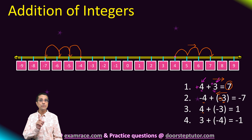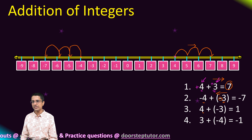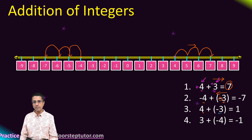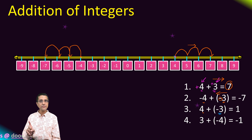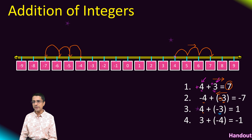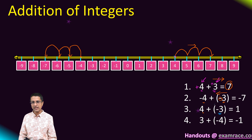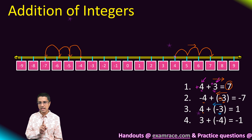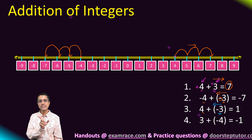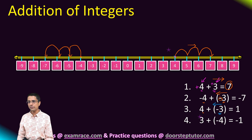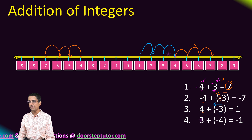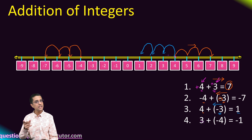Case three: we start at four. This time the second operand is minus three. Because it is negative, instead of going right we go left. We go left by three and end up at one, which is our answer.